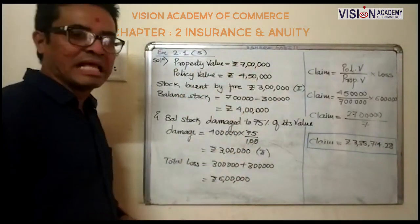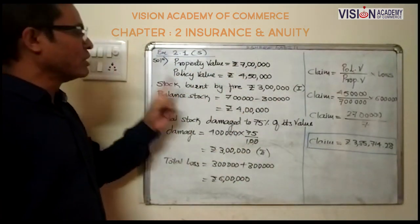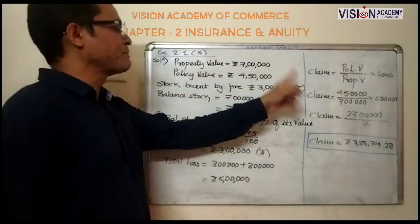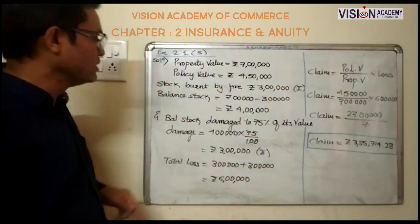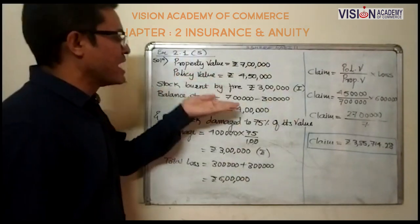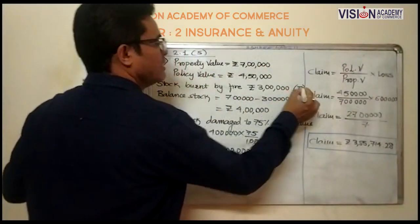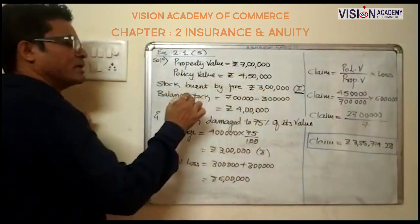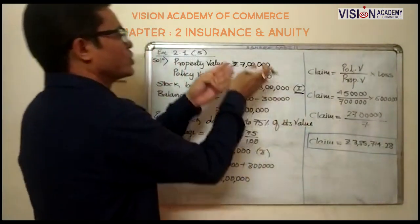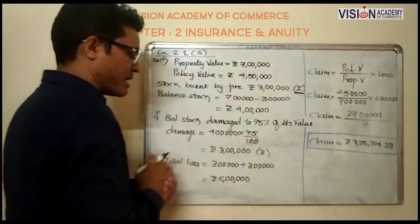As per the given information, property value is rupees 7 lakhs and policy value is rupees 4 lakhs 50 thousand. The stock burned by fire — this is our first loss — the stock of 3 lakhs out of 7 lakhs is totally burned by fire.